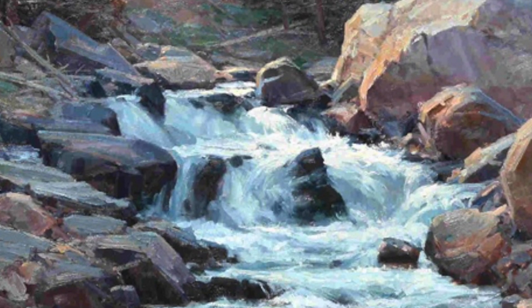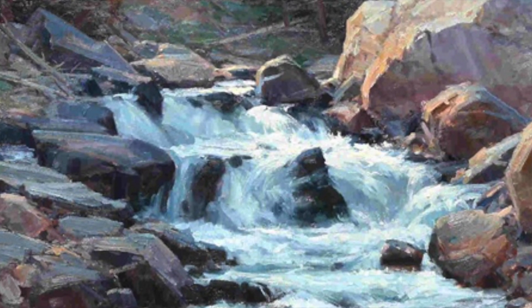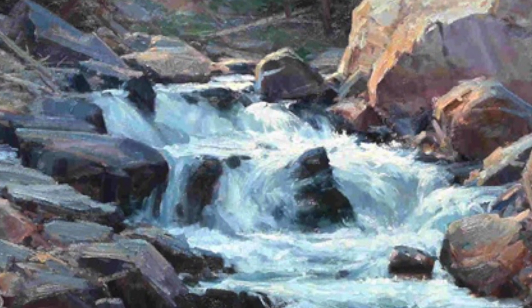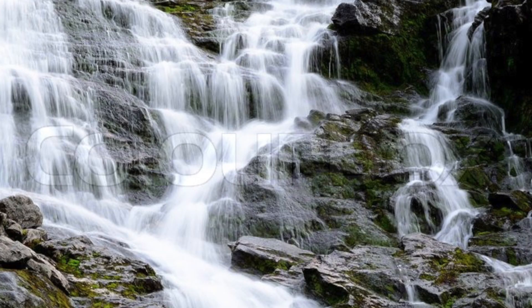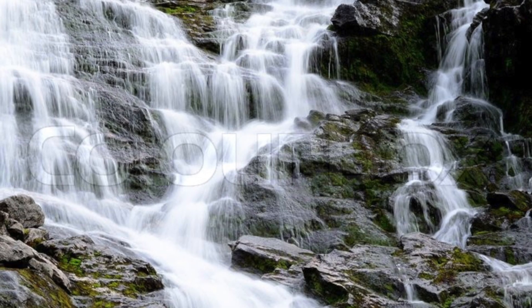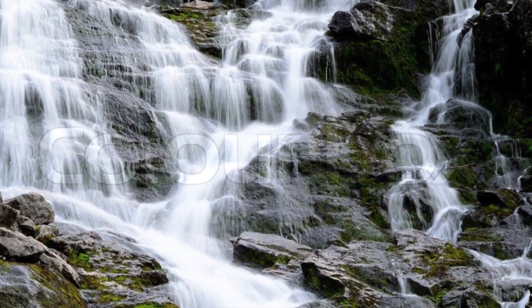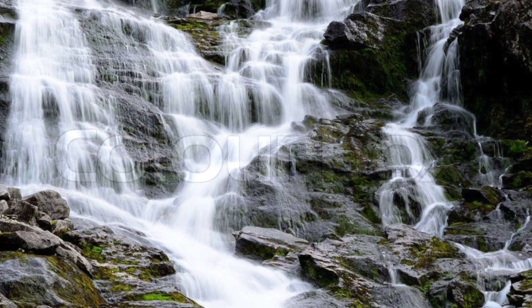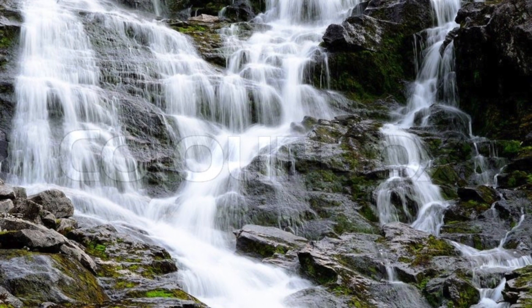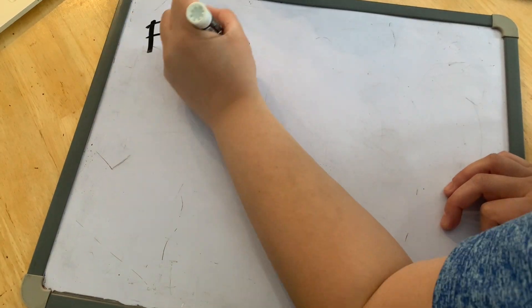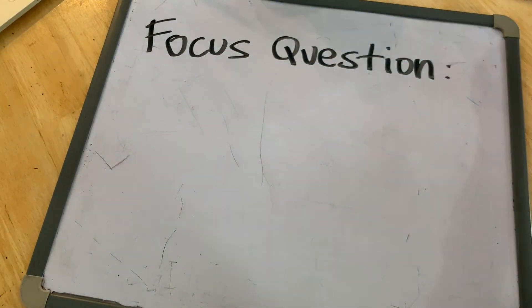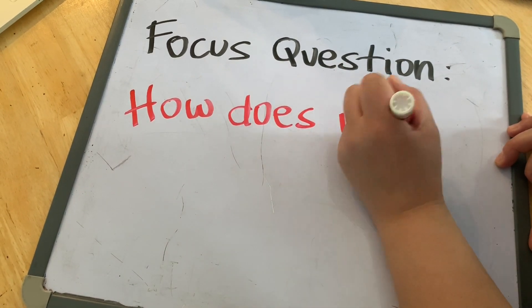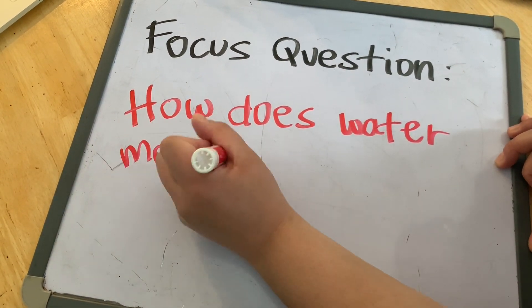Let's begin by thinking about what happens to a raindrop that falls into a mountain stream. You could say that the drop of water will flow downhill with the stream. Let's take a look at our focus question today: how does water move on a slope?